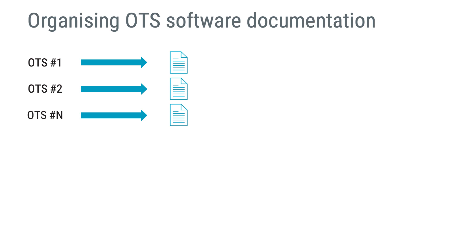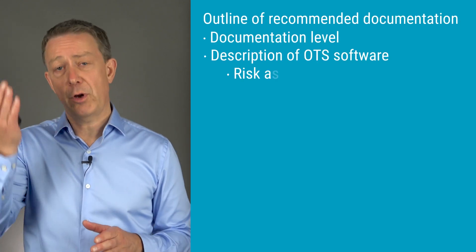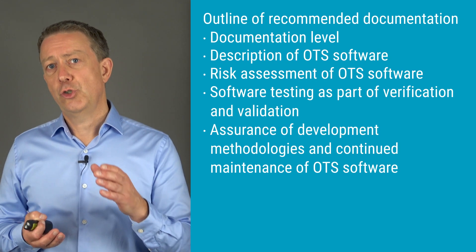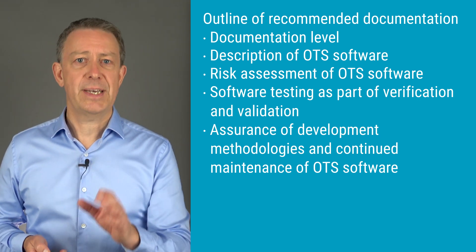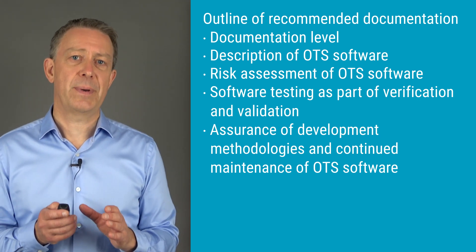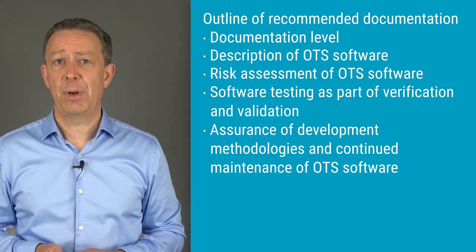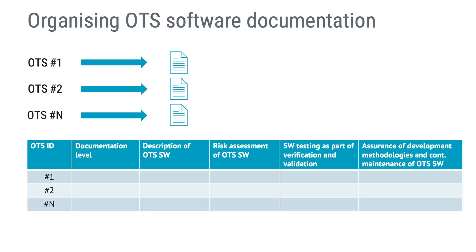Because OTS software is often subject to frequent changes, it is recommended that the OTS software documentation includes the following main topics. The point here is that there aren't too many topics and they could be arranged in a tabular format. A tabular format might be beneficial if you would like to update documentation automatically in conjunction with the software build. The FDA doesn't require a specific format, only that the information is correct and well organized.